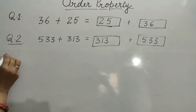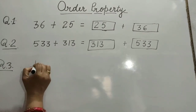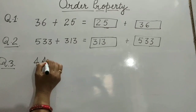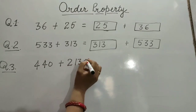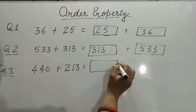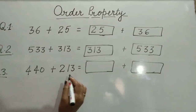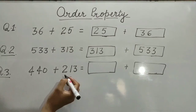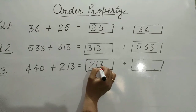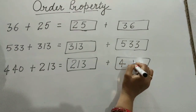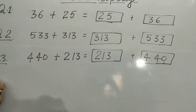Question number 3: 440 plus 213 is equal to what? We change the order of numbers. Write 213 plus 440. The sum will be the same.